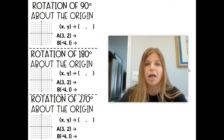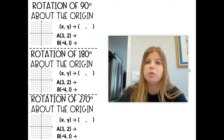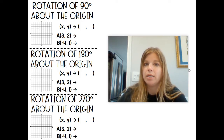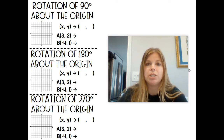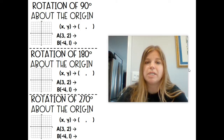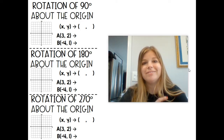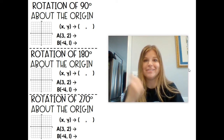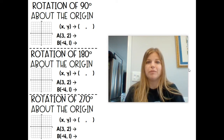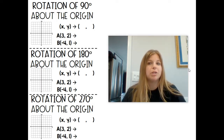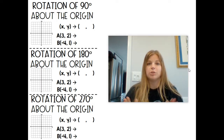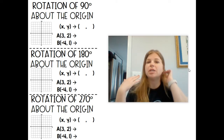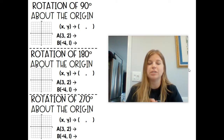This is all counterclockwise. When we rotate, we rotate counterclockwise. Think about how the hands would move on a clock — those would actually move to the right. When we rotate, we actually rotate to the left. You're going to see all of our rotations are going towards our left on your screen. That's how we're going to do all of our rotations. Clockwise rotation is only done if it specifically says clockwise; otherwise, it's always counterclockwise to the left.